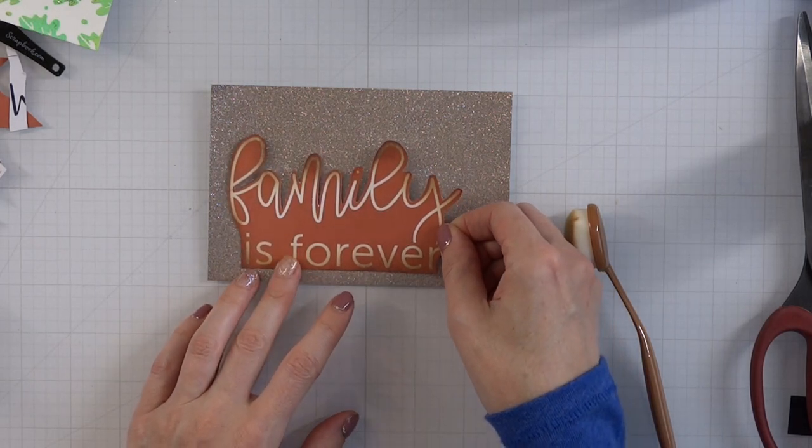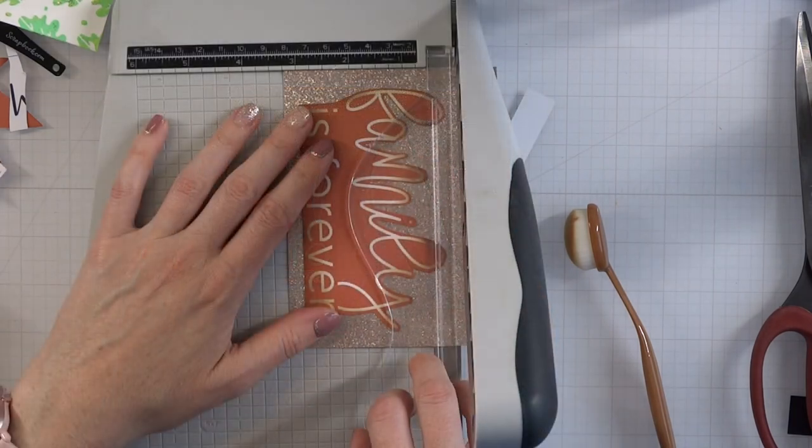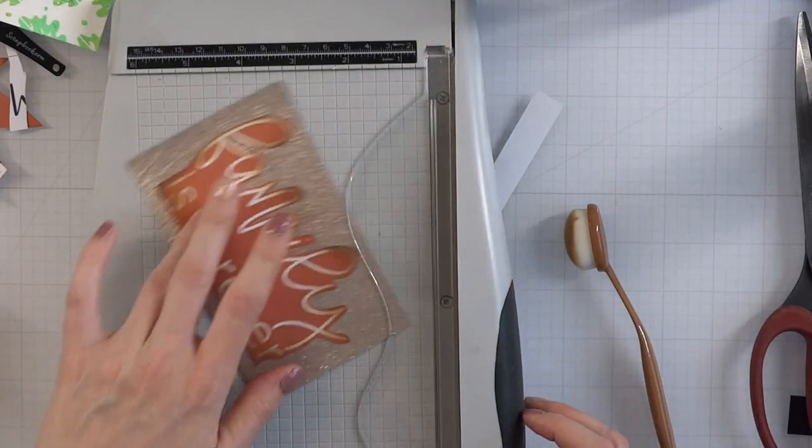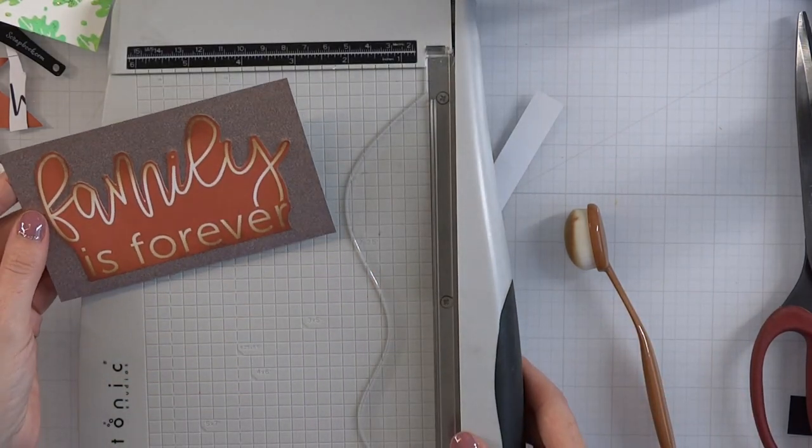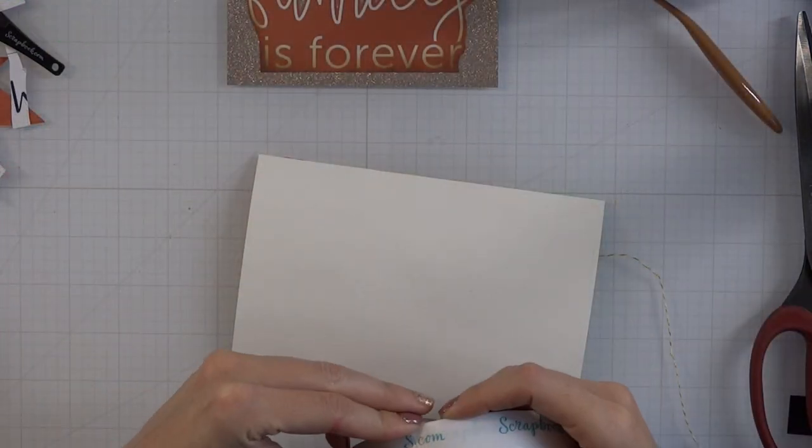Because I cut down my family is forever sentiment quite a bit, I'm going to cut down the mixed metals glitter paper as well. I'm loving this paper - it's thin, really easy to work with, and you can die cut it really nicely.